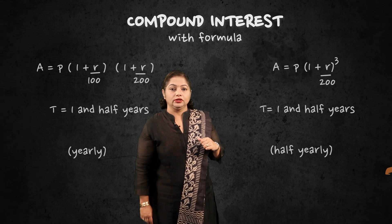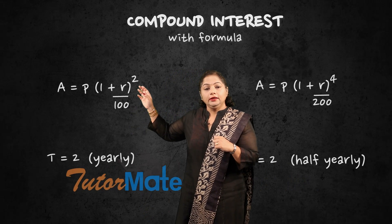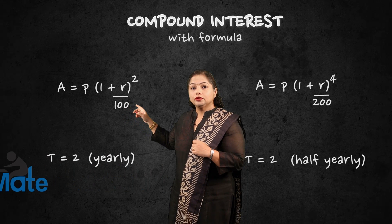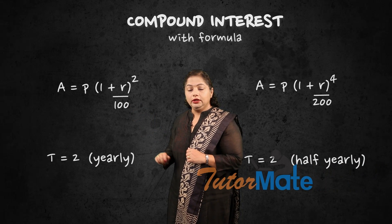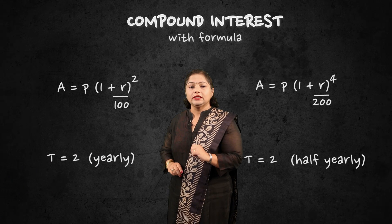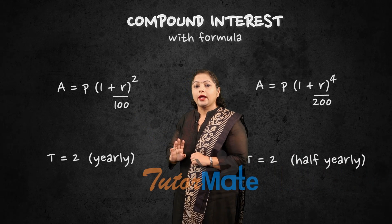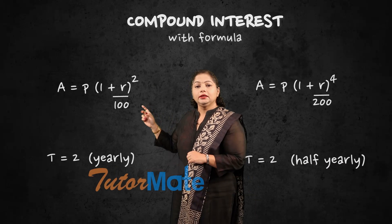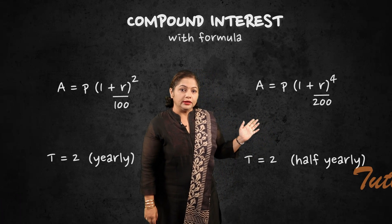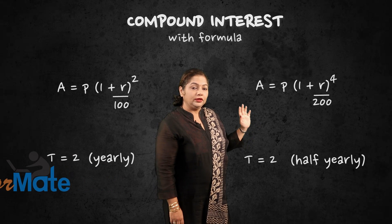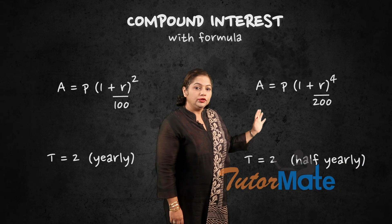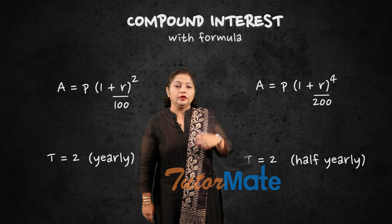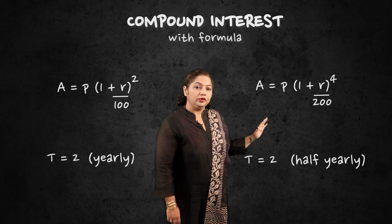Now for a time of 2 years: under the yearly column, compounded interest calculated yearly gives A equals P into bracket 1 plus R upon 100 raised to 2. Why 2? Because the time given is 2 years. There is no additional bracket because interest is calculated yearly and there are only 2 years. For compounded half yearly with 2 years: A equals P into bracket 1 plus R upon 200 raised to 4, because in 2 years there are four 6-month periods.